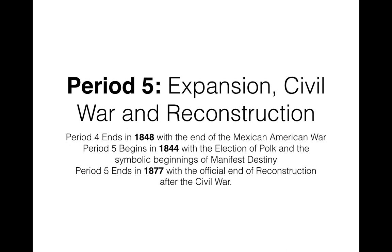I'm going to try to do a quick review of just expansion in period five. Between period four and five is a kind of weird start and end date. Period four actually ends in 1848 with the end of the Mexican-American War, which is a war that really sealed expansion in the United States. But period five begins in 1844, because the election of Polk is really the symbolic beginning of manifest destiny and expansion in the United States.